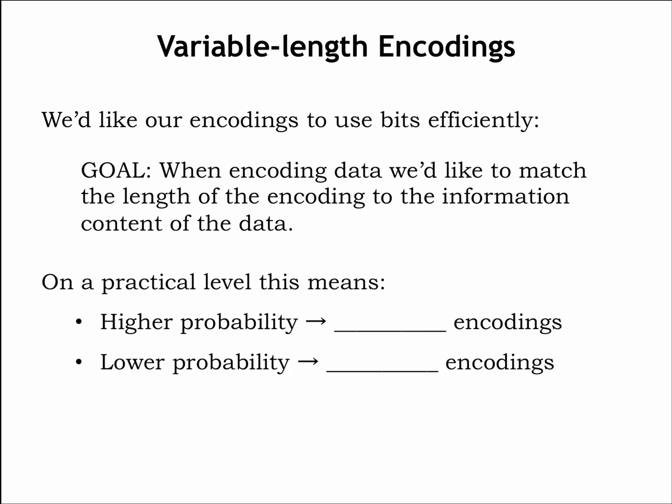We know that if x sub i has a higher probability, in other words a larger p sub i, that it has a smaller information content so we'd like to use shorter encodings. If x sub i has a lower probability, then we'd use a longer encoding. So, we'll be constructing encodings where the x sub i may have different length codes. We'll call these variable-length encodings.